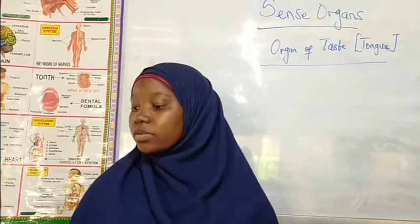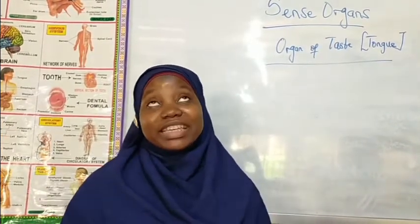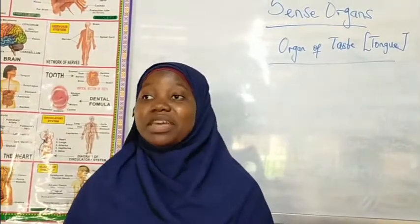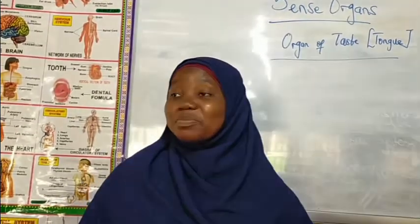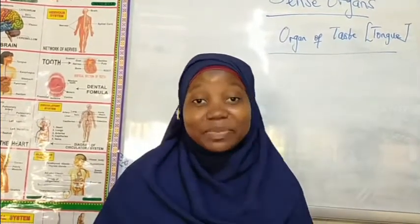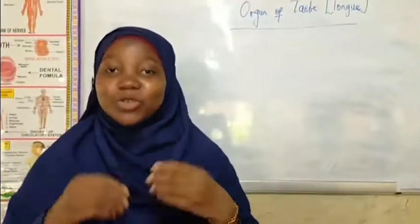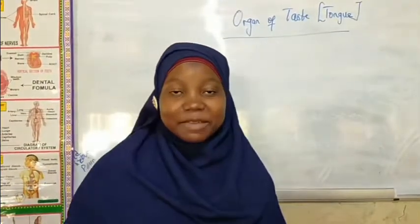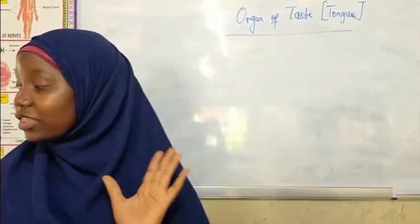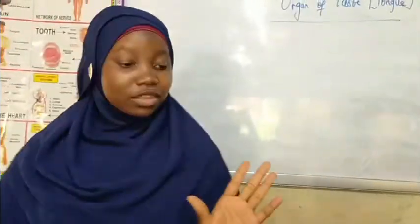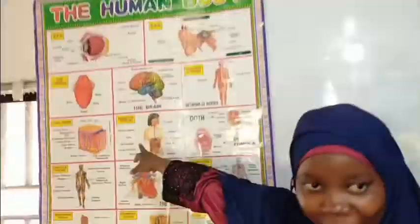Today we are going to be discussing our organ of taste. Some people prefer sweets and some people prefer salty food. At least 99% prefer sweets. We want to take ice cream, candy and so on. Now we are going to look at the tongue — the mammalian tongue.